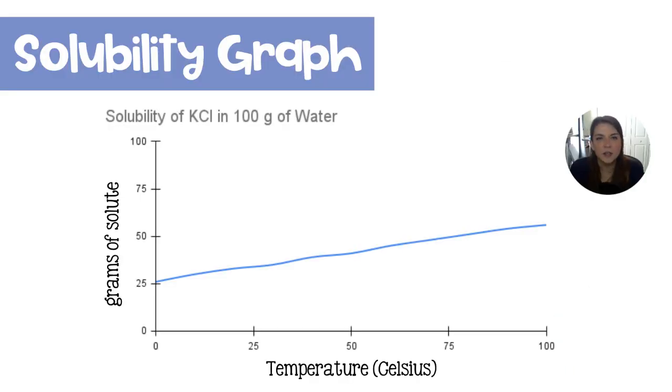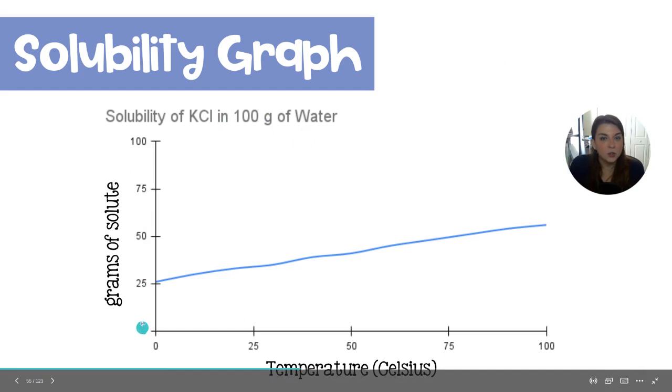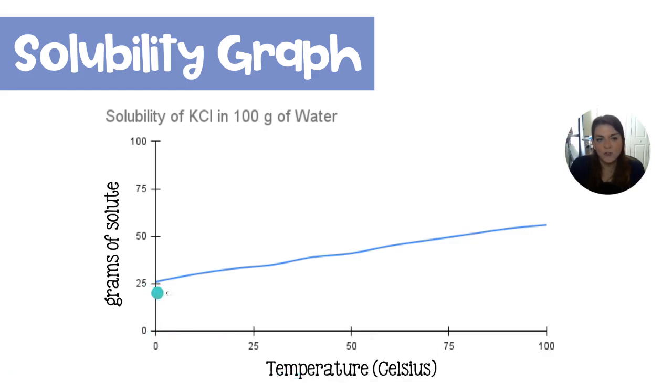Here I have graphed for you the solubility of potassium chloride in 100 grams of water. Here we have the grams of solute, which would be the calcium chloride. And over here we have the temperature in Celsius of the water. So you can see that at 0 degrees Celsius, like right when water wants to be freezing, it's freshly a liquid. We can get just over 25 grams of the potassium chloride in there. But as the temperature rises, we are able to dissolve more and more potassium chloride.